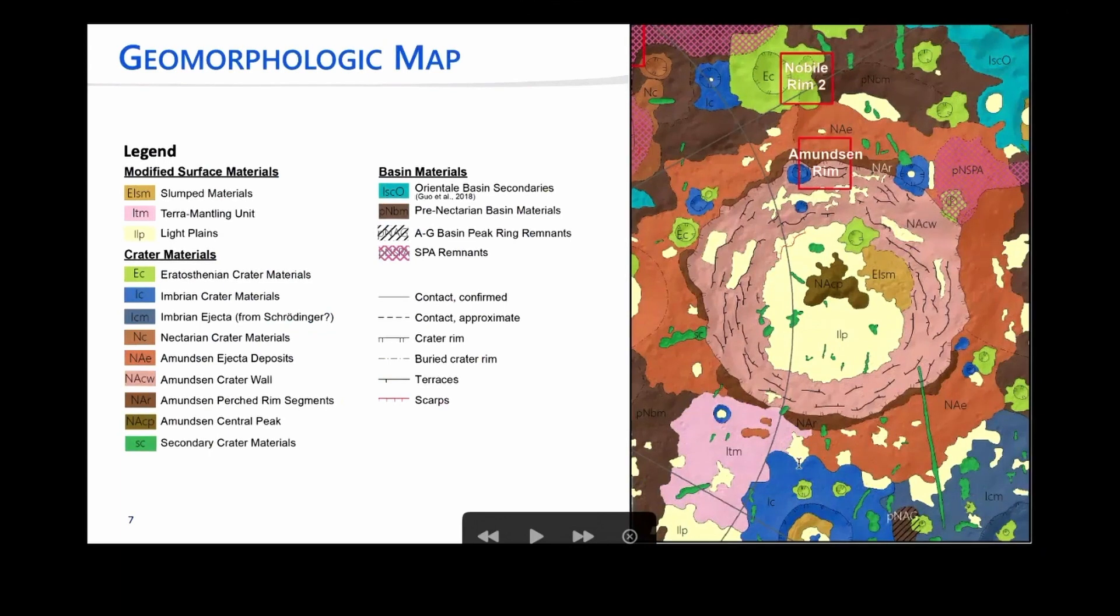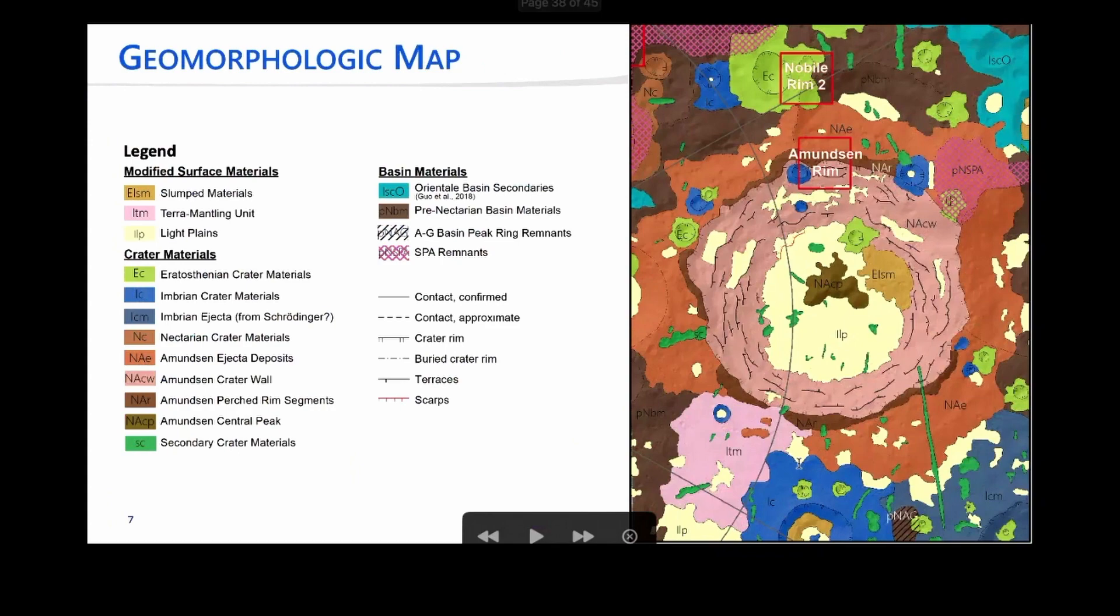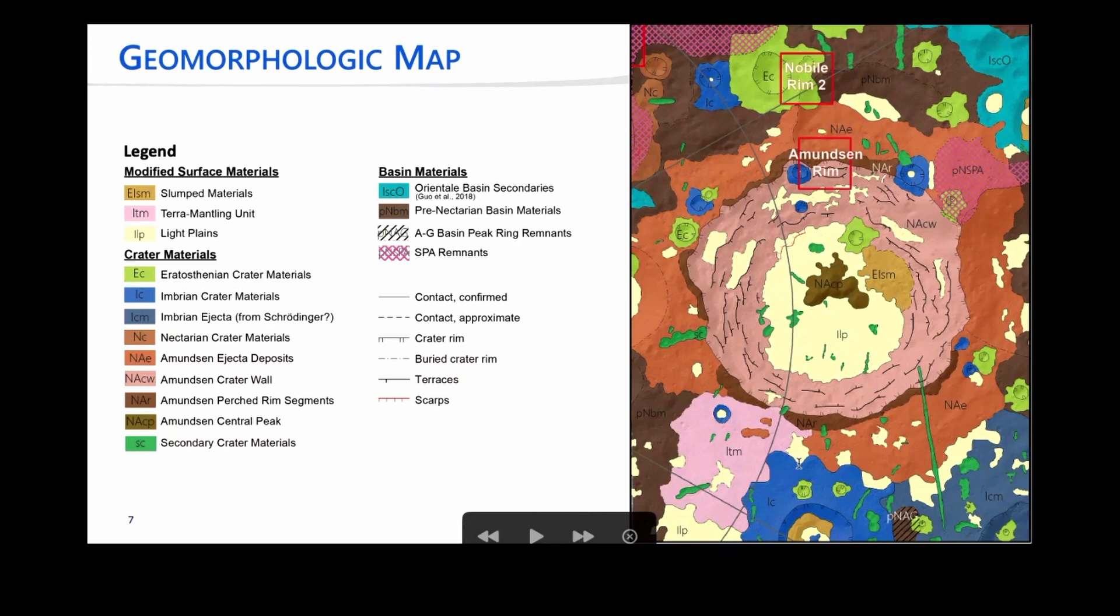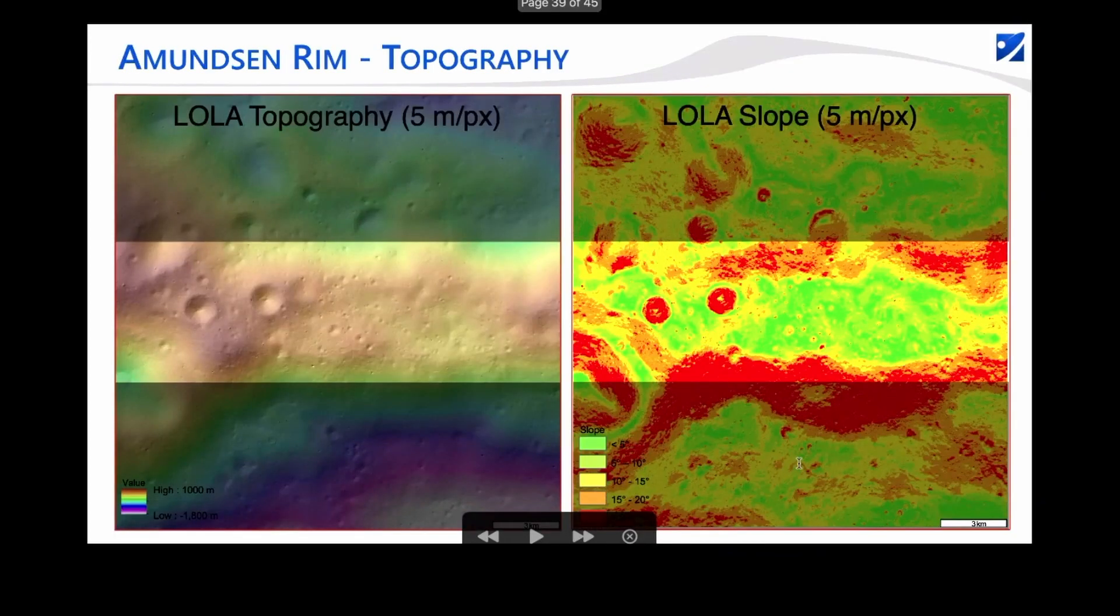When we assemble all of these things, we get this one to 100,000 scale geologic map. And here you can see the position for the Amundsen Rim and the Nobile Rim, two areas.